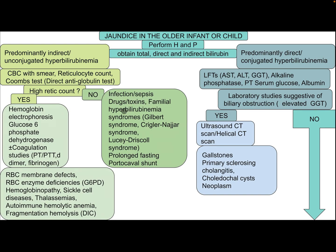If the reticulocyte count is normal, the differential diagnosis may include infection/sepsis, direct toxin, and familial hyperbilirubinemia syndromes such as Gilbert syndrome, Crigler-Najjar syndrome, Lucey-Driscoll syndrome, prolonged fasting, and portocaval shunt.